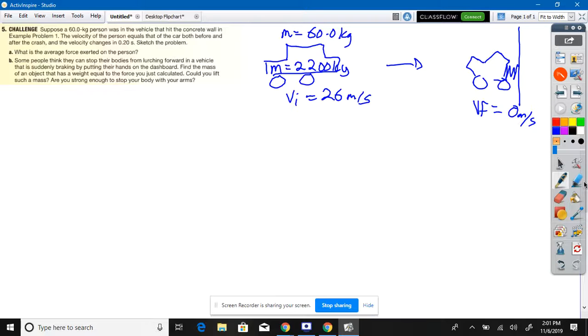Now it says what's the average force exerted on the person? The velocity of the person equals that of the car before and after the crash. Velocity changes in 0.2 seconds. So as it's hitting the wall and as the crumple zone crumples, the change in time that happens is 0.20 seconds. The change in momentum here is impulse. What is the relationship between impulse and change in momentum? What is the equation we just learned? Force times your change in time equals your change in momentum. Well, how do you change momentum? Mass times your change in velocity.